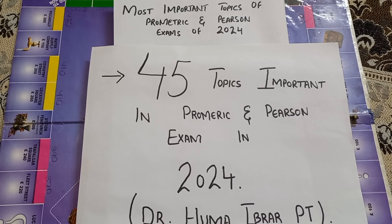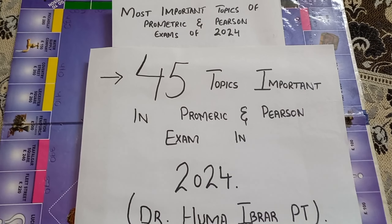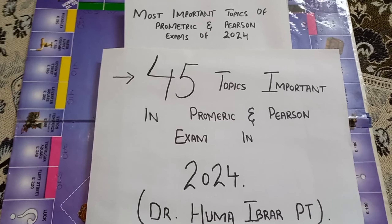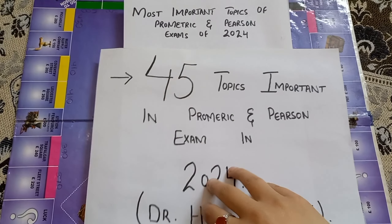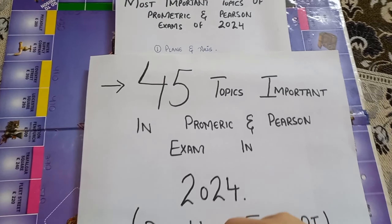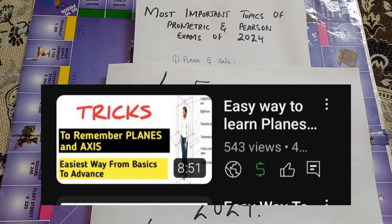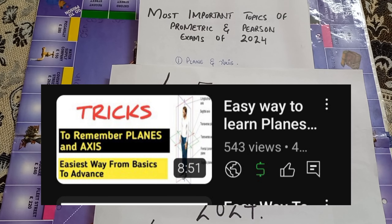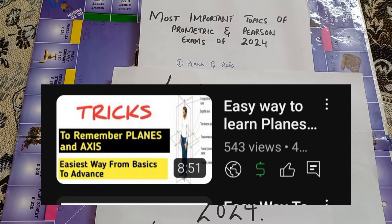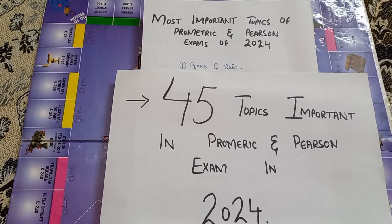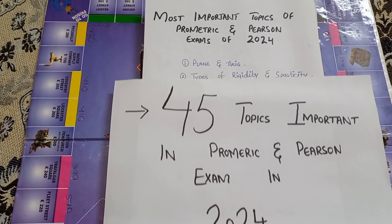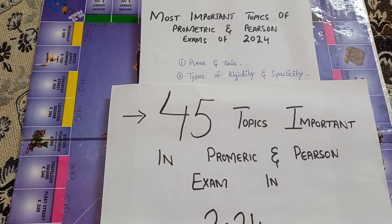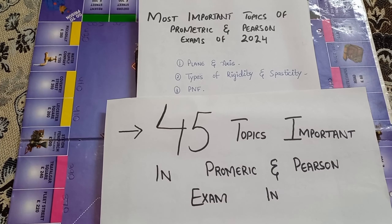Let's talk about the 45 most important topics in the Prometrick and Pearson exam of 2024 for physiotherapists. Number one is about Plan and Access — a lecture video is also available on my YouTube channel and the link is given in the description box, kindly check it out. Number two is about types of rigidity and spasticity. Number three is about PNF.